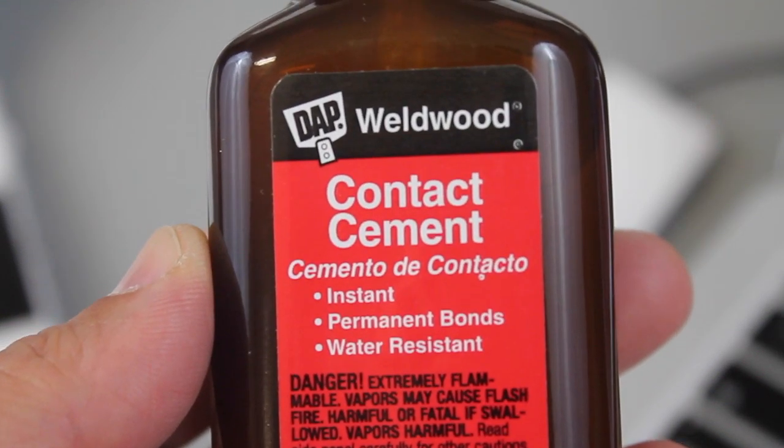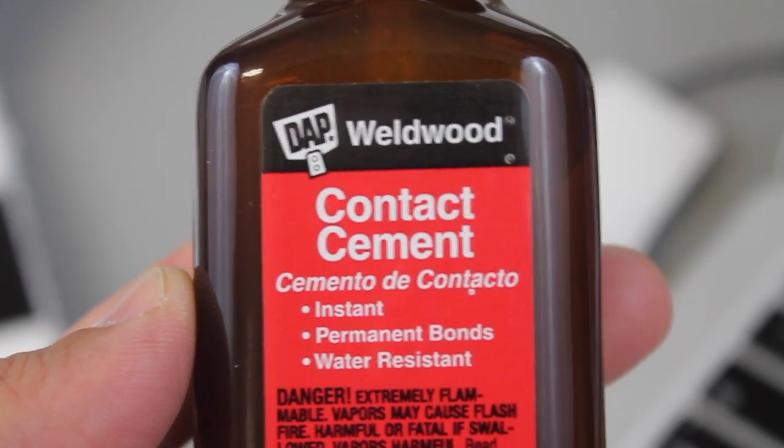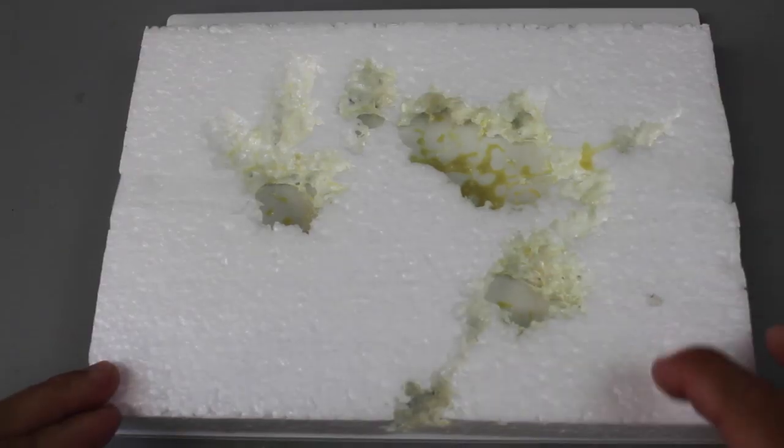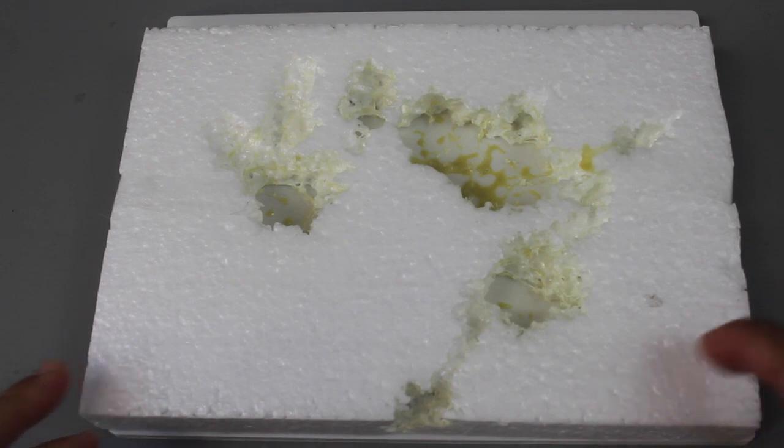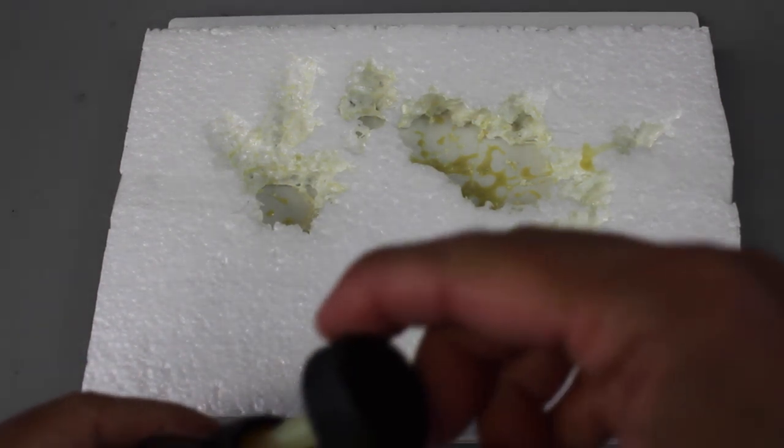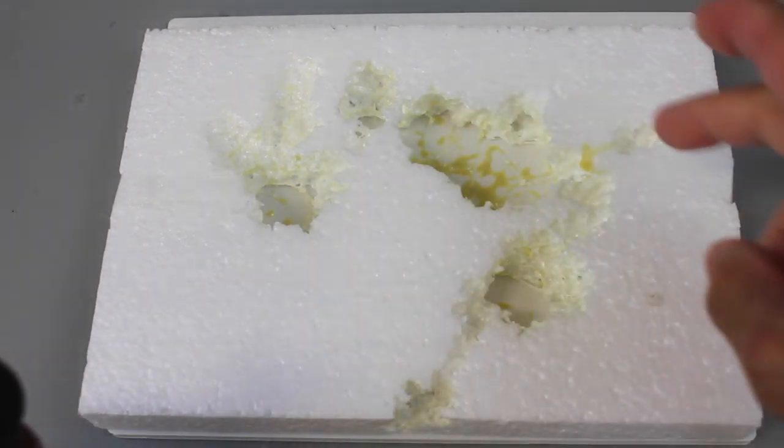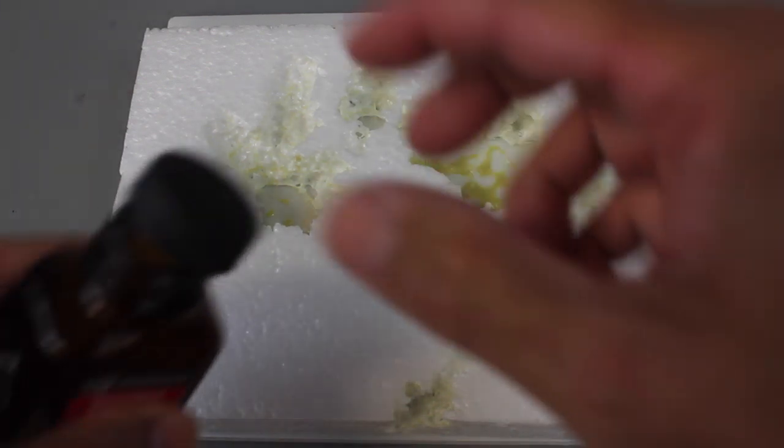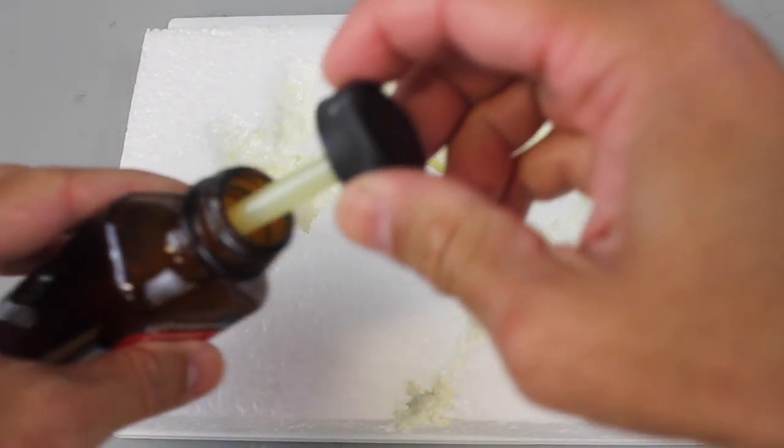I'm going to demonstrate a quick test before we actually put it on the rudder. This is a piece of packing foam that actually came in the box with the Ranger EX and you'll see that I've already dropped some glue on here just to do a test. Now let me show you what happens.